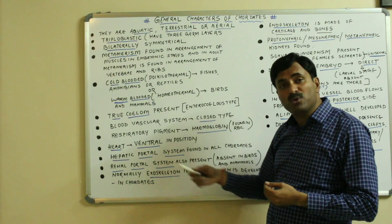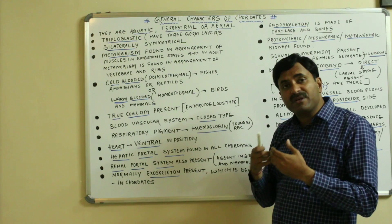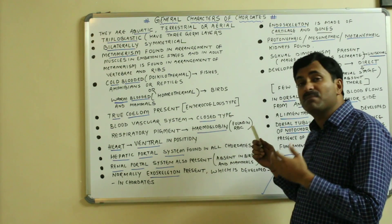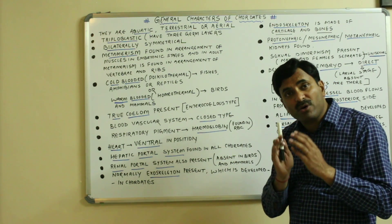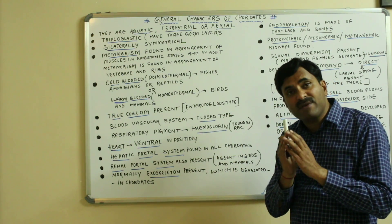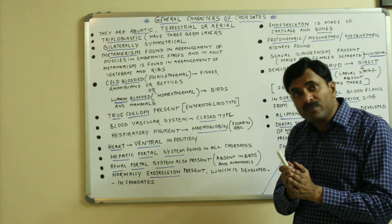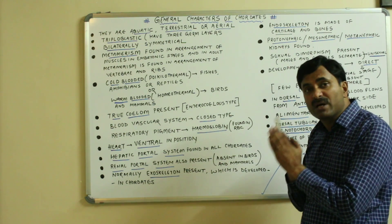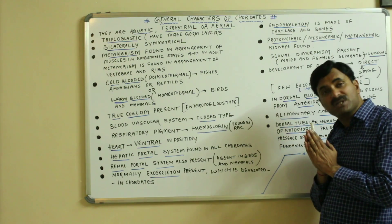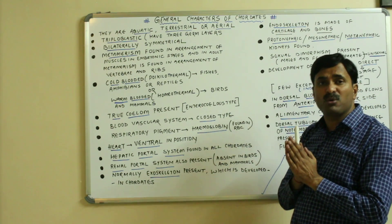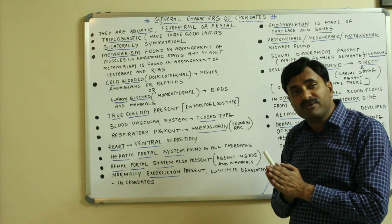A renal portal system is also present in chordates, but it is not found in birds and mammals. All other chordates have a renal portal system associated with the kidney, but birds and mammals do not.